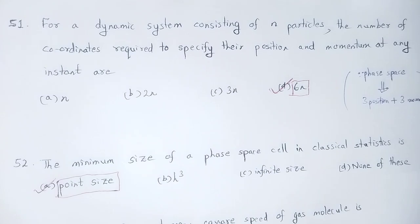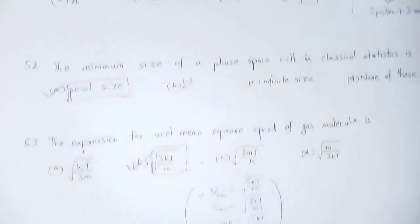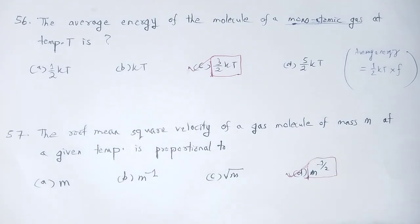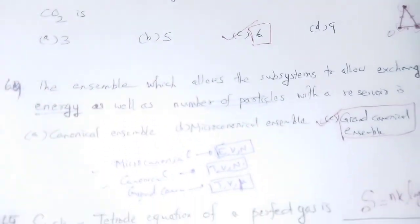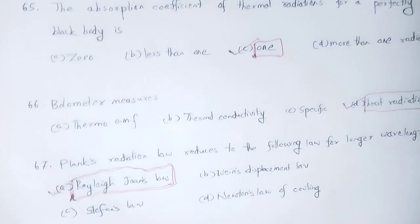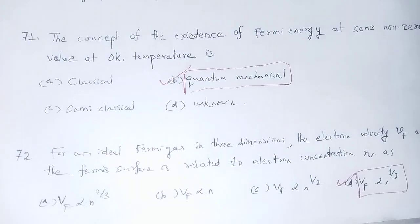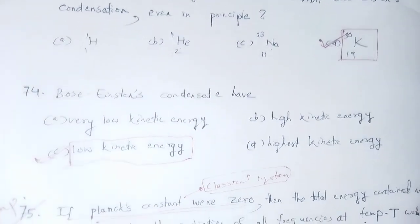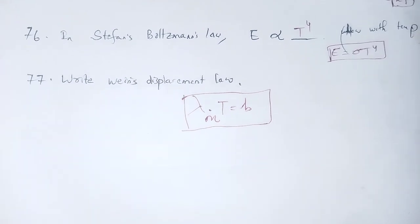This completes the statistical mechanics section. To summarize, we covered questions 51 to 57, then 58 to 65, then 65 to 72, and finally 73 to 77. The thermal and statistical mechanics section is now complete. Next session we have another topic. With these useful and informative notes, let me wind up the session. Thank you.